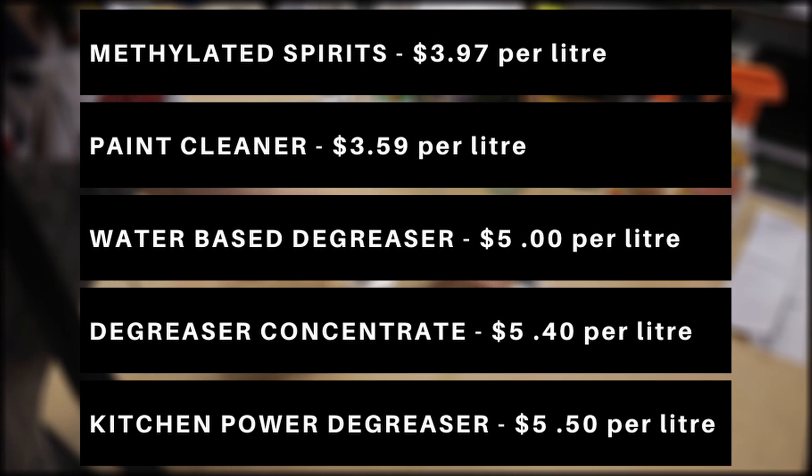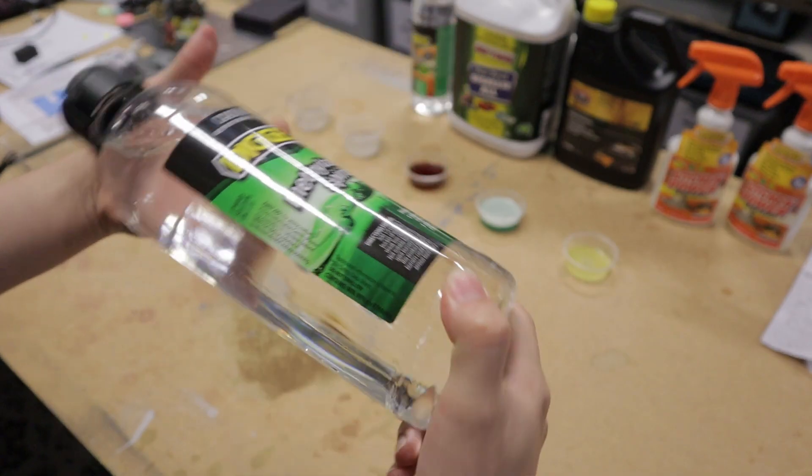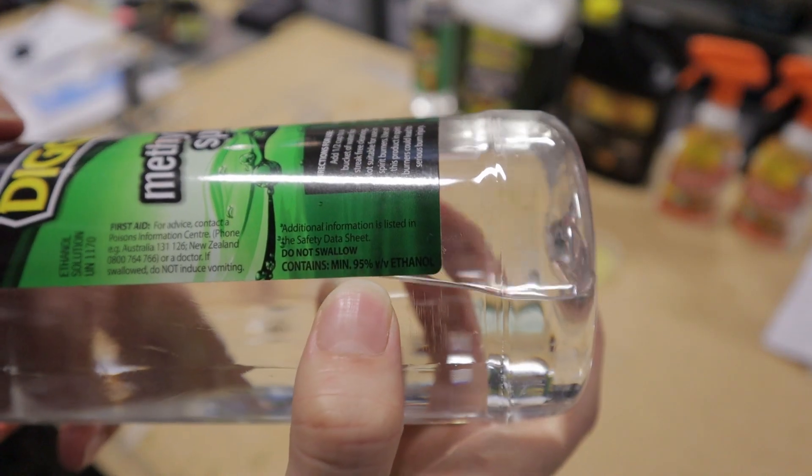And for reference, here's a price breakdown for all the cleaners used in the video. So this was a really interesting experiment, and I learned a few new things today. Looks like I'll be using methylated spirits from now on, unless I find a better, cheaper alternative. And thank you Uncle Jesse for your video, it really inspired us to think outside the box.